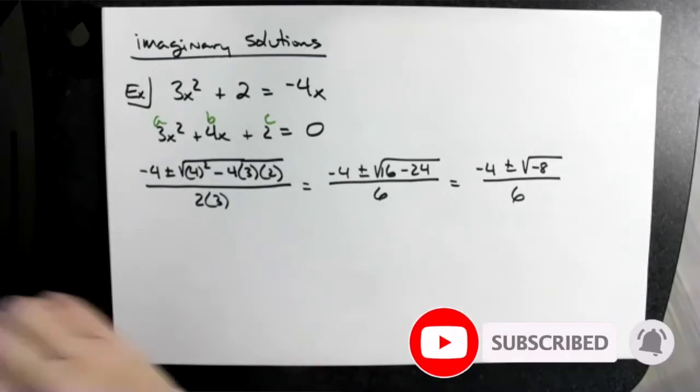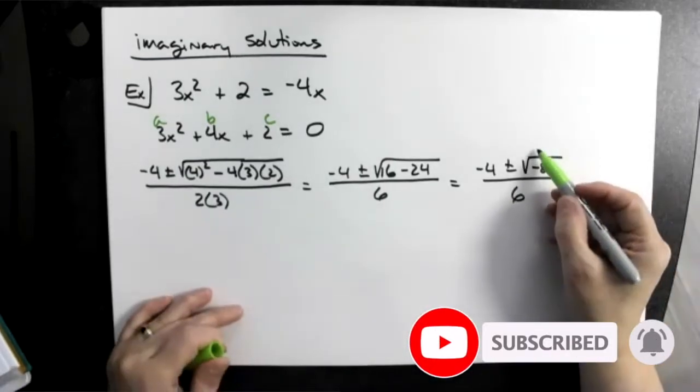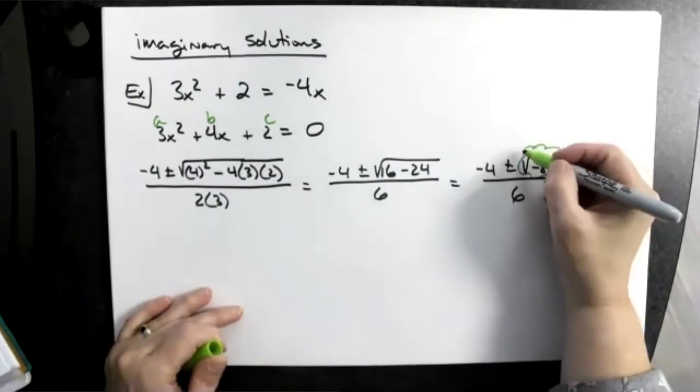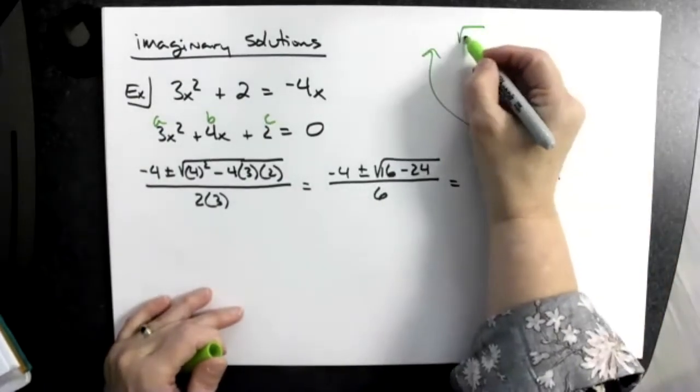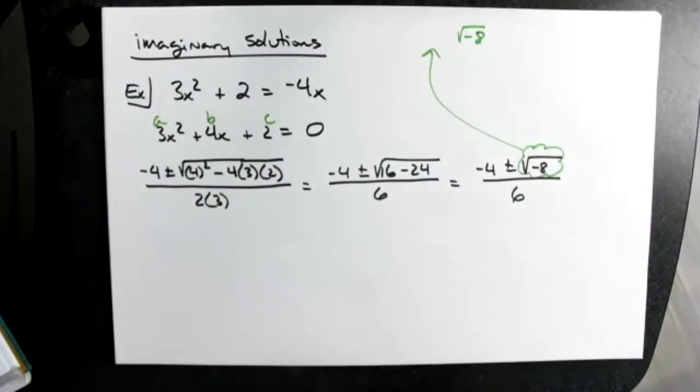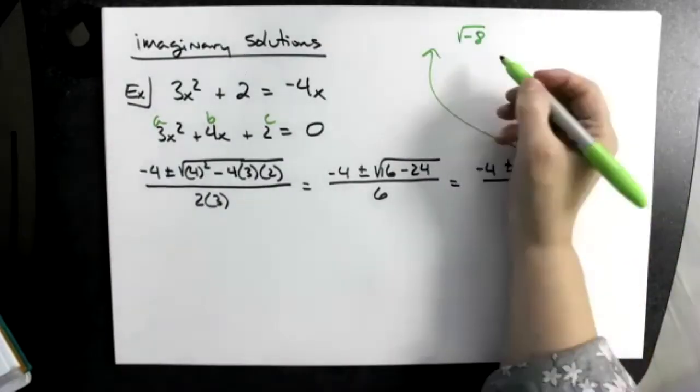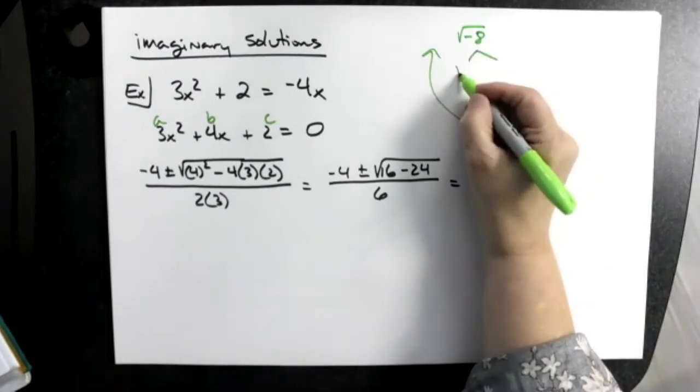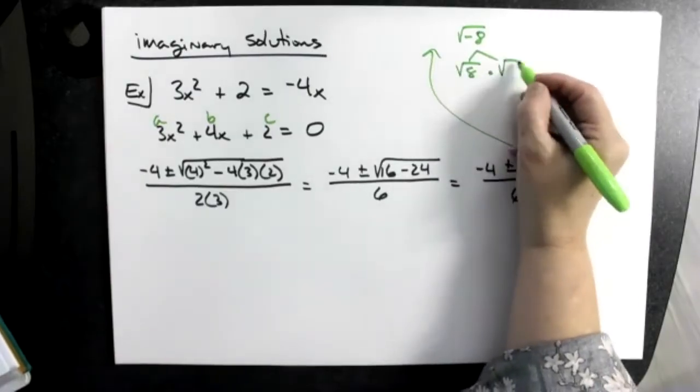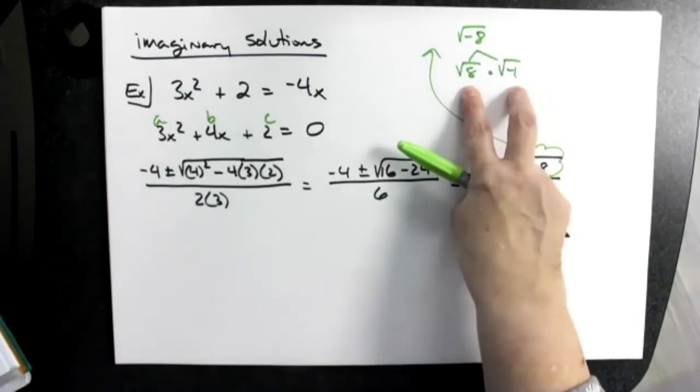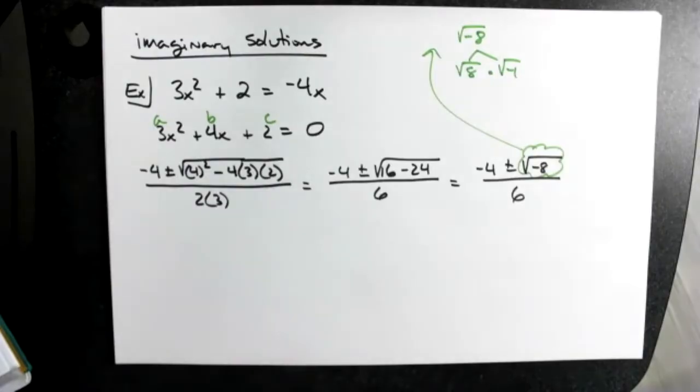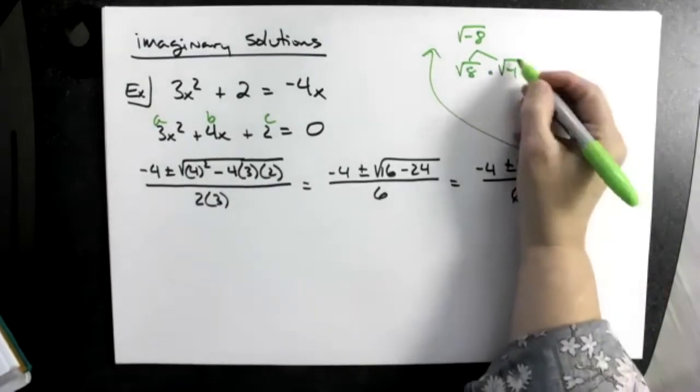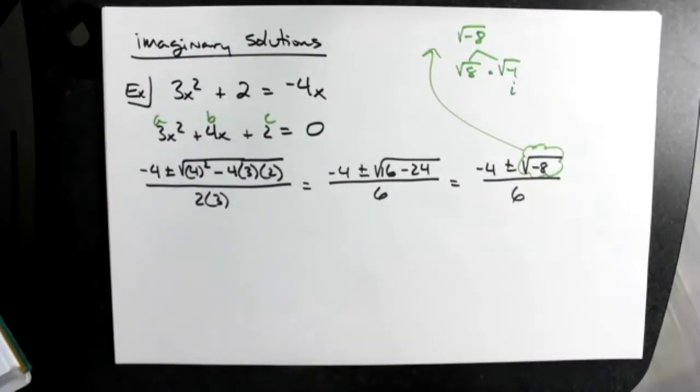Let's take this and do the work up here. Square root of negative 8 - we did these maybe last week or the week before. Let's break that up into the square root of 8 times the square root of negative 1, because negative 1 times 8 is going to give me that negative 8. Get that negative 1 out there by itself so that we know that square root of negative 1 is going to be an i, because that's going to be our imaginary number.